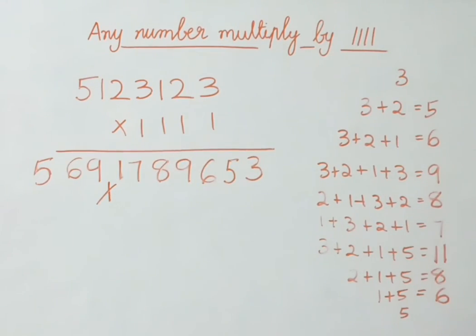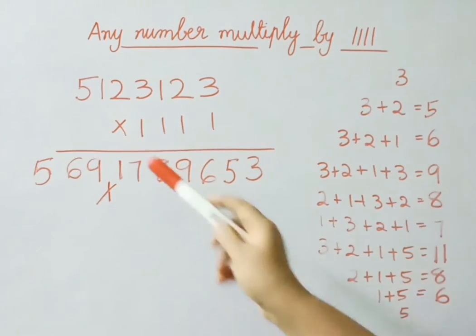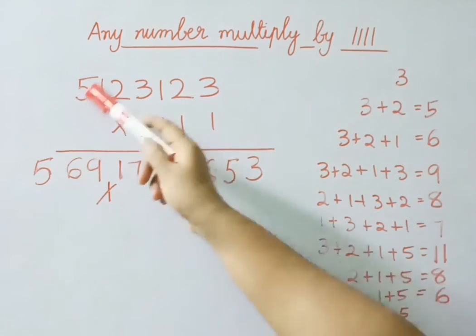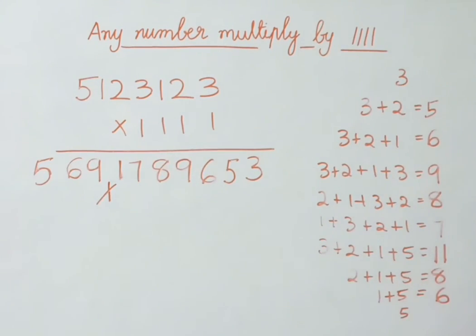Now add the last 2 digits: 1 plus 5 is 6. Now write the last digit as it is. So we get the result.